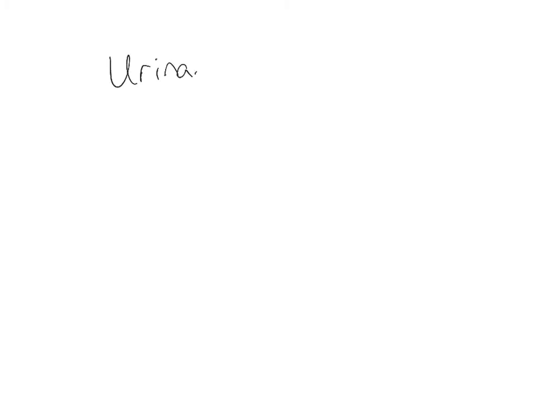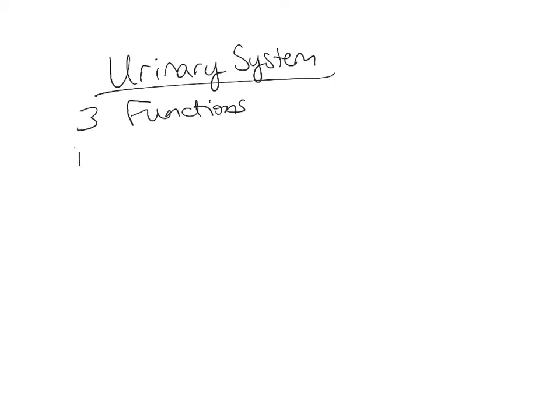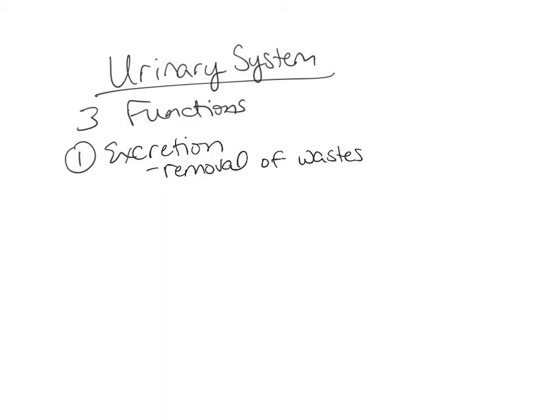This lecture is on chapter 26, which is the urinary system. We're first going to look at the functions of the urinary system. There are three functions. The first function is excretion, which is the removal of organic wastes from the body. The body creates wastes, and then the kidneys help to get rid of those wastes through two processes called filtration and secretion.